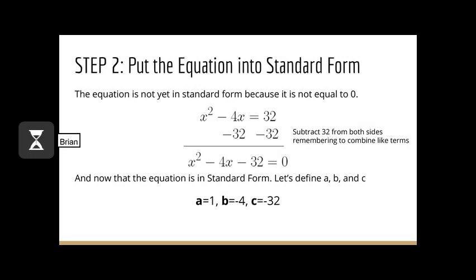Step 2 is to put the equation into standard form. The equation is not yet in standard form because it is not equal to zero. So right now we have x squared minus 4x equals 32. In order to make this equal to zero, we're going to subtract 32 from both sides, leaving us with x squared minus 4x minus 32 equals zero. Now that the equation is in standard form, let's define a, b, and c: a equals 1, b equals negative 4, and c equals negative 32.